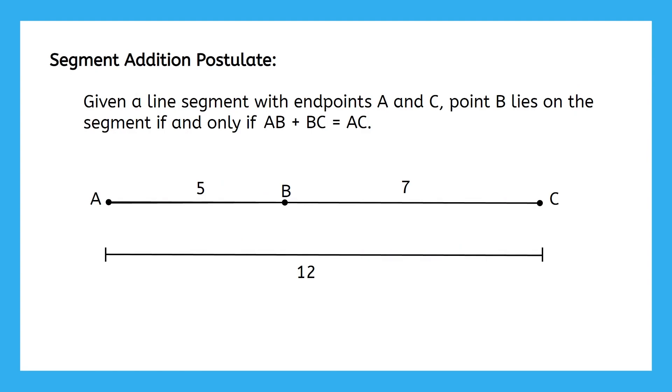Do you remember the Segment Addition Postulate from a few units back? It says that given a line segment with endpoints A and C, point B lies on the segment if and only if AB plus BC equals AC. Do you remember how we moved point B off of segment AC and then these numbers would no longer be true?